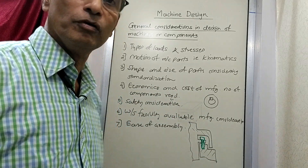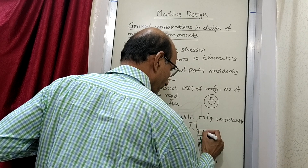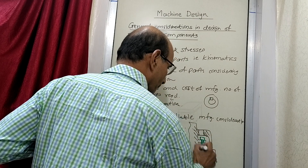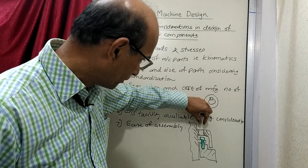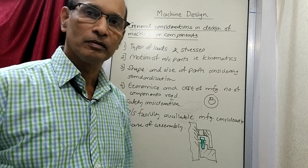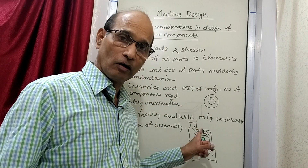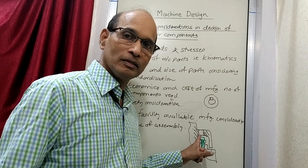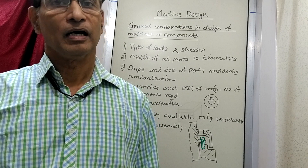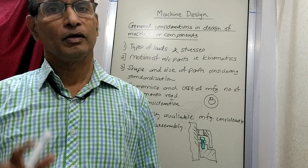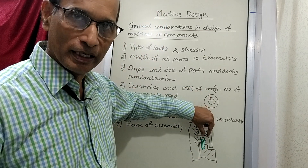So what modification you will have to do here is, maybe you will have to provide some kind of a cutout here. Some kind of a hole is provided through which you can pass the bolt and then operate that bolt. Even after doing this, you have provided a space here, provided a hole here.